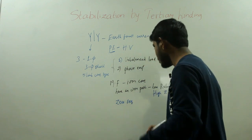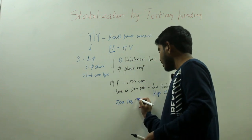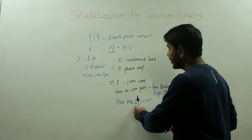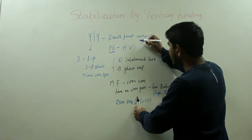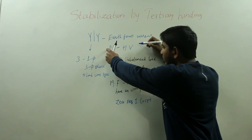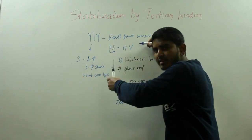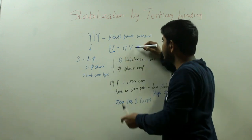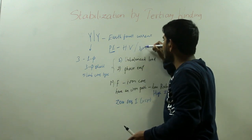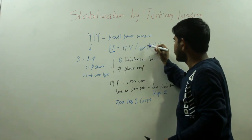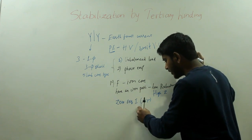The zero sequence impedance is very high — around 0.5 per unit. When this zero sequence impedance is very high, your earth fault current may be insufficient to operate your protective equipment. When you cannot operate your protective equipment in the case of an unsymmetrical load, you may not be able to suppress harmonic voltages or limit the voltage unbalancing. So you have to overcome this zero sequence impedance.